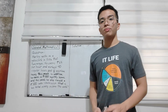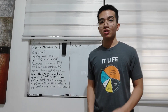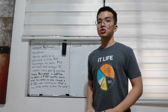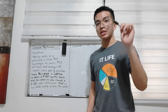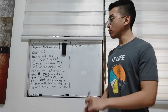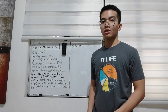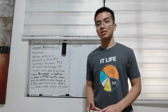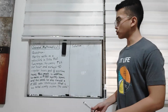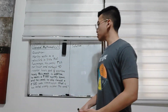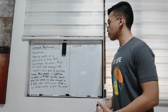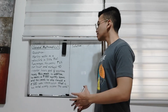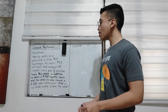Hello guys, welcome back to my YouTube channel. In today's video I have this question coming from General Mathematics Grade 11. As we can notice, this given question is referring to business mathematics. The question reads: Harley works as a sales worker in Vista Montana. He earns 65 pesos per hour and...